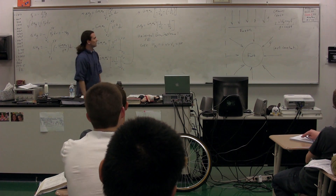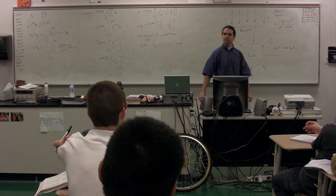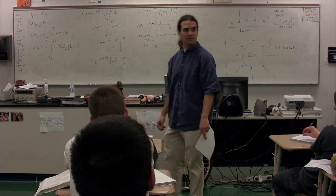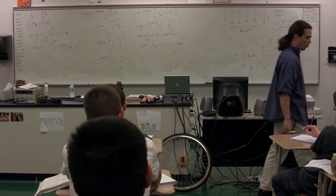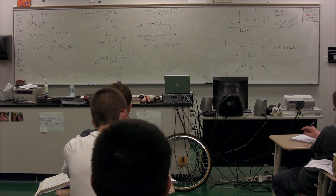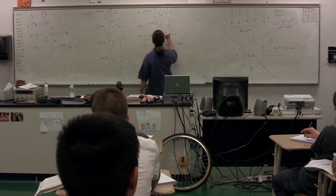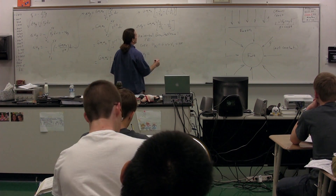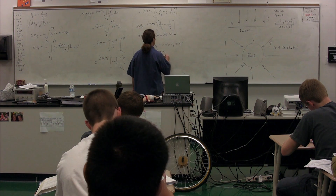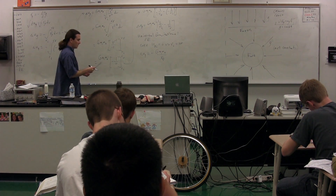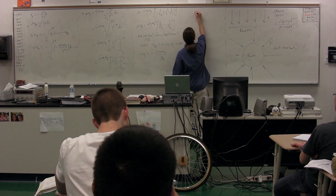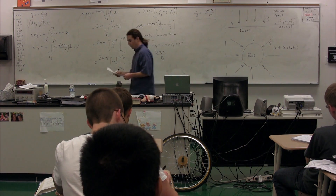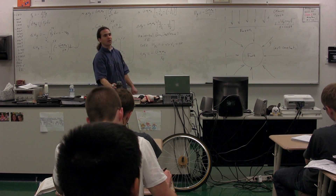What does that do to the change in gravitational potential energy? Notice: 1 over R initial becomes 1 over infinity, which is zero. So the 1 over R initial term goes away, and it turns out that the change in gravitational potential energy of an object is equal to negative big G times M1 times M2 over R final. In other words, the gravitational potential energy of an object is negative big G times M1 times M2 over R. This is gravitational potential energy in a non-constant gravitational field.